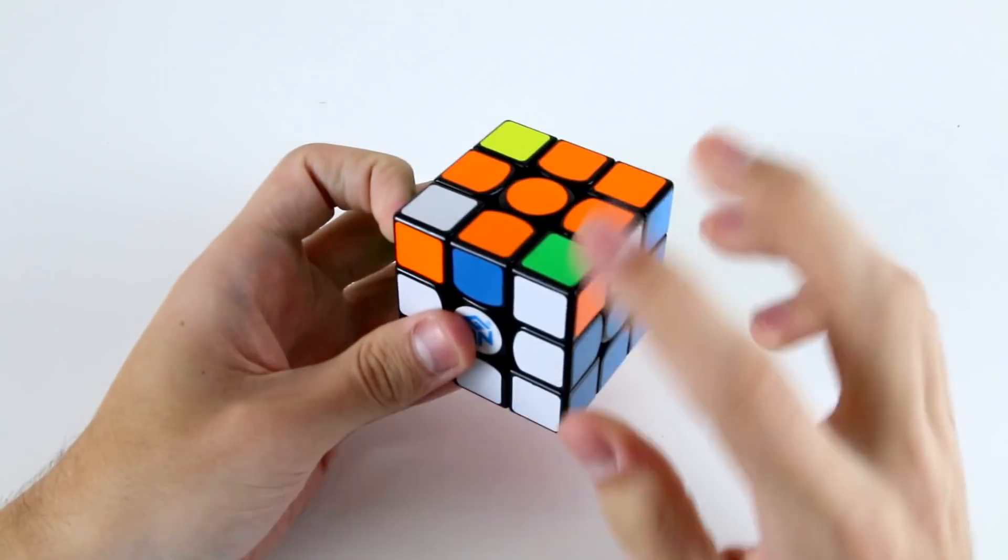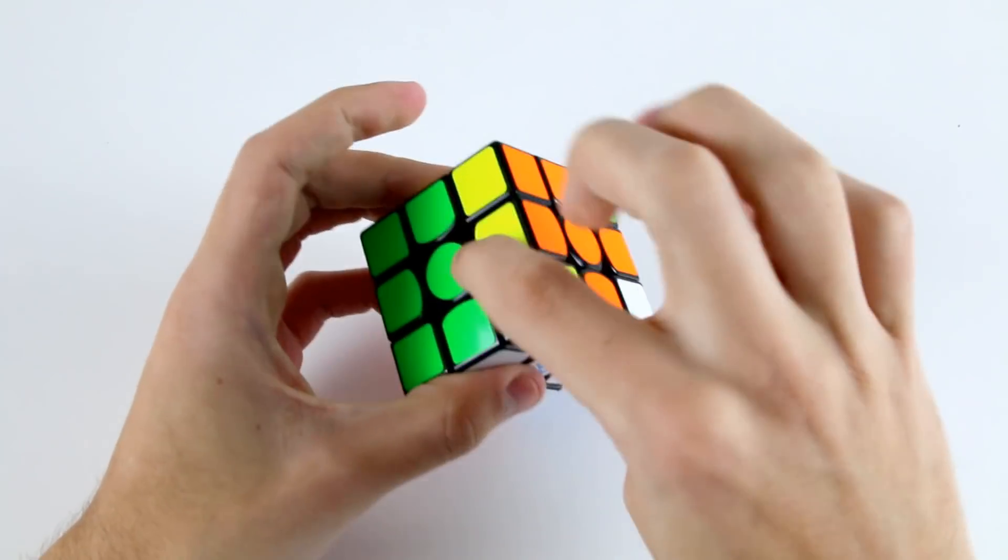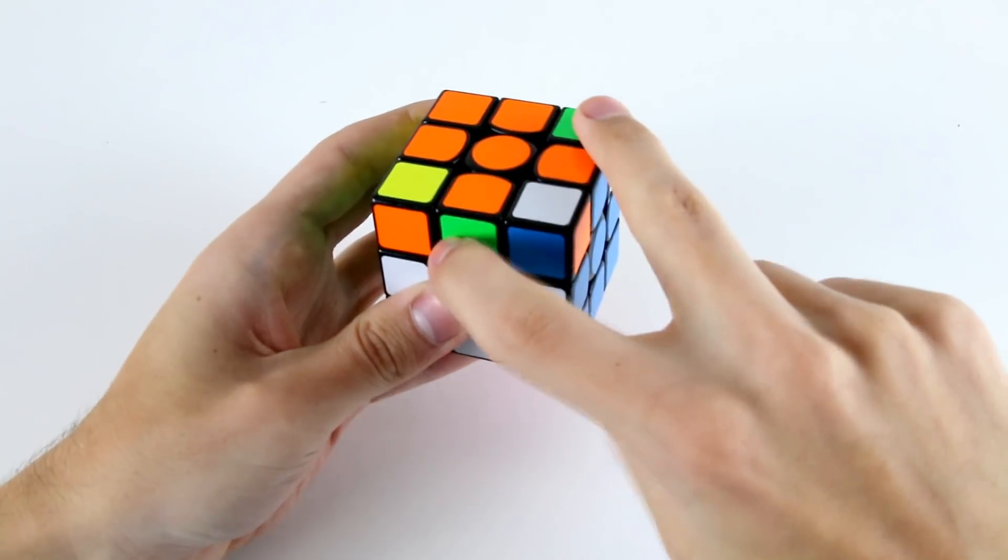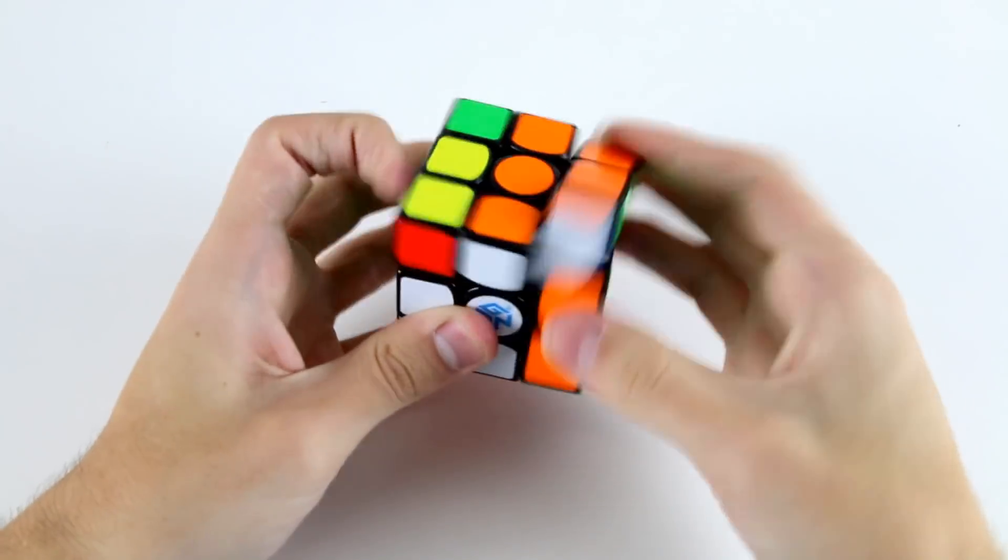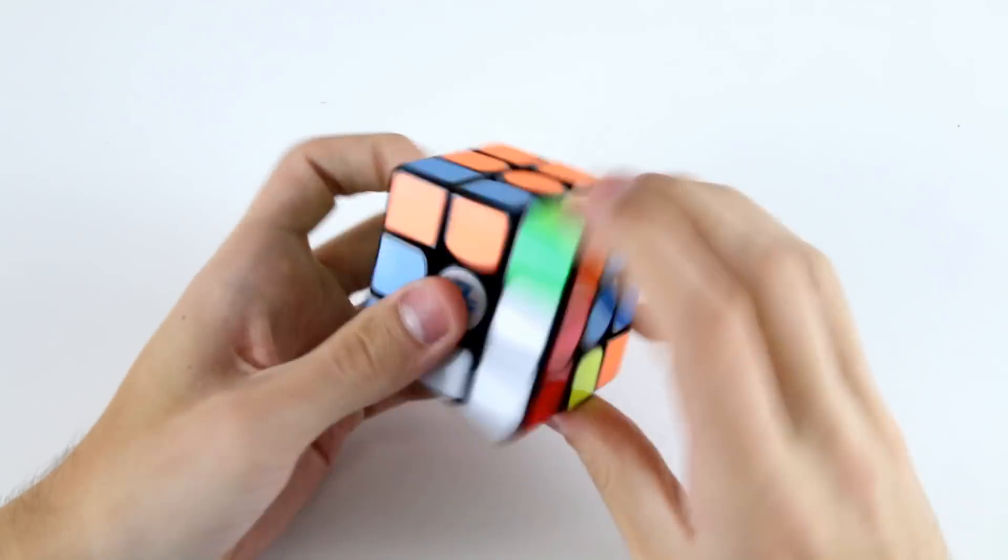Instead of doing a U2 and then doing OLL from this angle what I'm going to do is do a U and do OLL like this because that preserves this block and also attaches these two pieces together. I'm going to end up with a blocky PLL and I've got a J permutation which is really easy.